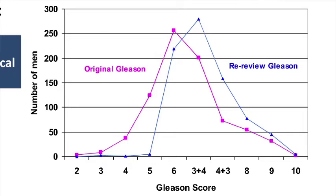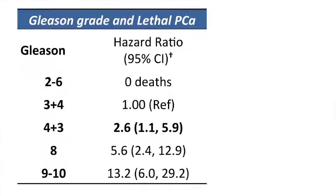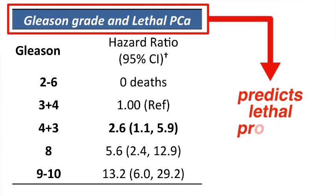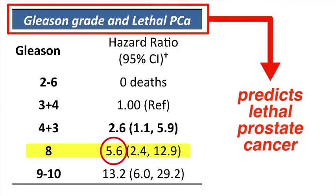One other piece of information that we found, which is quite interesting, was that Gleason grading across the continuum predicts lethal prostate cancer. As cancers get more poorly differentiated, men with Gleason 8 cancers had about a six times greater risk of dying of prostate cancer during follow-up compared to men with Gleason 3 plus 4 cancers. Men with 9 to 10 cancers were about 13 times more likely.